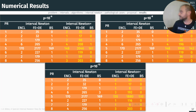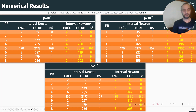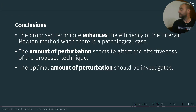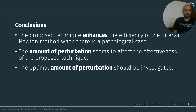These are the numerical results. The yellow numbers show an improvement, and this improvement gets bigger as the perturbation tends to epsilon. In conclusion, the proposed technique increases the efficiency of the interval Newton method in pathological cases. The amount of perturbation seems to affect the effectiveness of the technique, and the optimality of this perturbation should be investigated in future work.